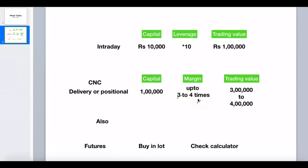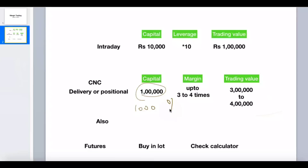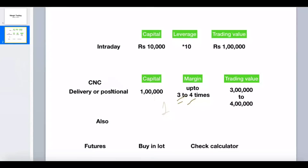Your value becomes 3 to 4 lakh rupees — roughly 2, 3, or 4 lakh depending on the stock, you get up to a maximum of four times. So your target will be 900 to 1,200 rupees instead of 300 rupees — roughly 1,000 rupees, which is one percent of your capital. This is how you can increase your profit in delivery and positional trading.